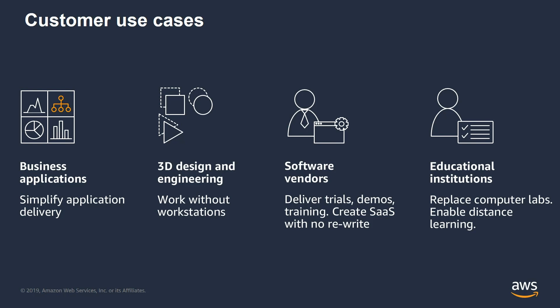The third category with a lot of usage is software vendors. They have trials and demos they want to provide potential customers, and rather than shipping out the software, they can stream it over the internet for users to try out. Educational institutions are also using AppStream to simplify computer labs — students no longer have to go into the lab to access compute-intensive applications. They can get those applications streamed to their desktop through a web browser.